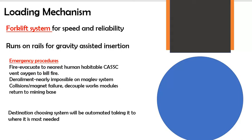For emergency procedures, in the case of fire, oxygen will be vented from the cask. Derailment is almost impossible, and collisions or magnet failures would lead to functioning sections being decoupled and returning to the nearest mining station. The destination routing system will be computer-orientated and will calculate the fastest route for all trains on the network.